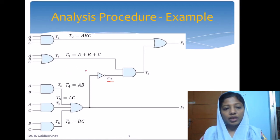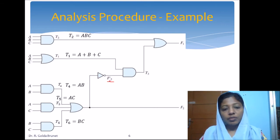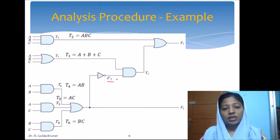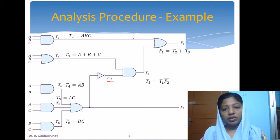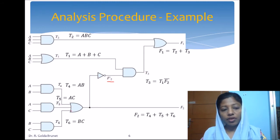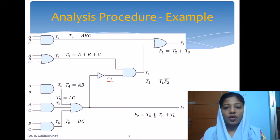We label the gate that accepts input directly or from previous gates. Since the output of this OR gate is going to be F2, and this will be F2 complement, the gate accepting T1 and F2 complement is labeled T3. Now we can write the outputs: T3 = T1 · F2', F1 = T2 + T3, and F2 = T4 + T5 + T6, where '+' stands for logical OR.